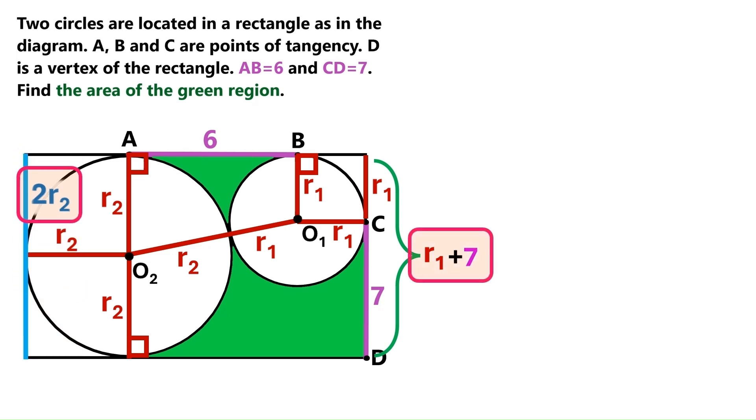That means we can take these two expressions and put an equal sign between them. And then we can take this plus 7 and move it to this side, where it becomes minus 7. R1 equals 2R2 minus 7. We've got a very important finding, and that's great.